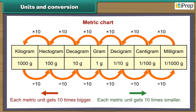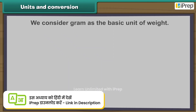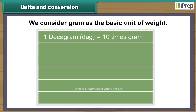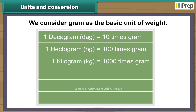When we move from one metric unit to another to the left in the metric chart, the value becomes ten times bigger. Considering grams as the basic unit of weight: one decagram (dag) is equal to ten grams, one hectogram (hg) is equal to one hundred grams, one kilogram (kg) is equal to one thousand grams, and one decigram (dg) is equal to one tenth of a gram.